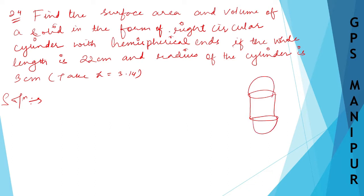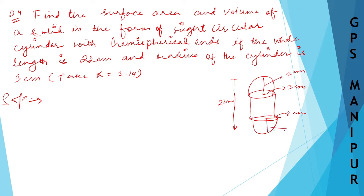Now, with hemispherical ends, the whole length — that is the total height — is 22 centimeters. The radius of the cylinder is 3 centimeters. So the radius of the hemisphere also will be 3 centimeters on both ends.